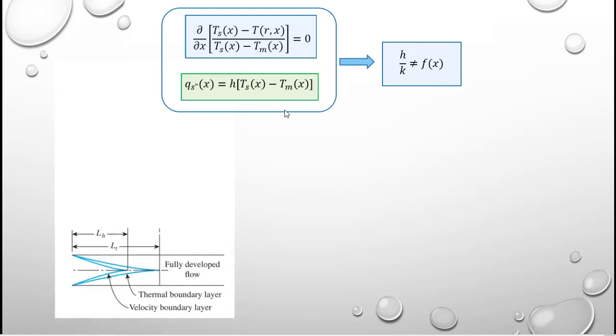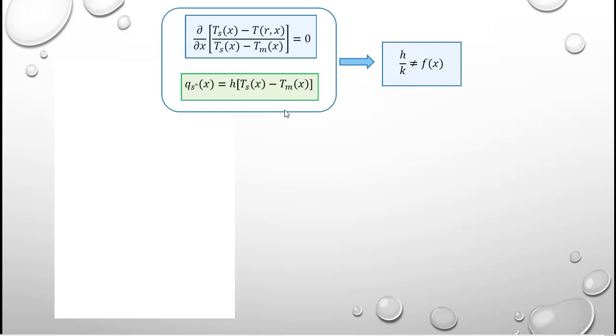Looking at the figure in the lower left hand corner, we see that in different cases the velocity boundary layer and the thermal boundary layer will grow at different rates. In the case of a Prandtl number equal to one, we would typically find that the velocity and the thermal boundary layers coalesce at more or less the exact same point.